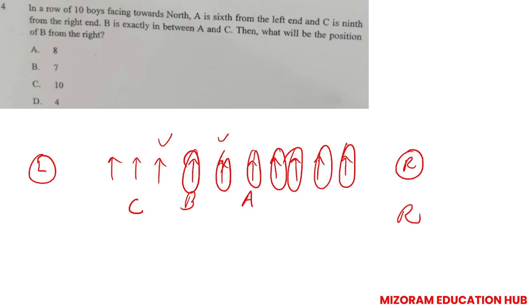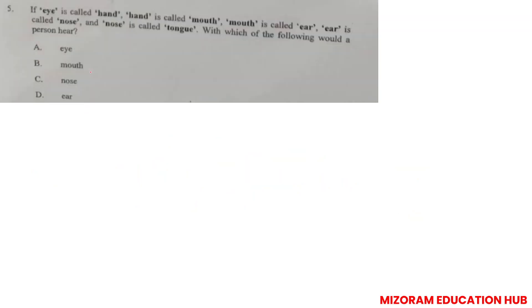Question number 5: If I is called hand, hand is called mouth, mouth is called ear, ear is called nose, nose is called tongue, with which of the following would a person hear? Ear is called nose, so nose is correct answer.